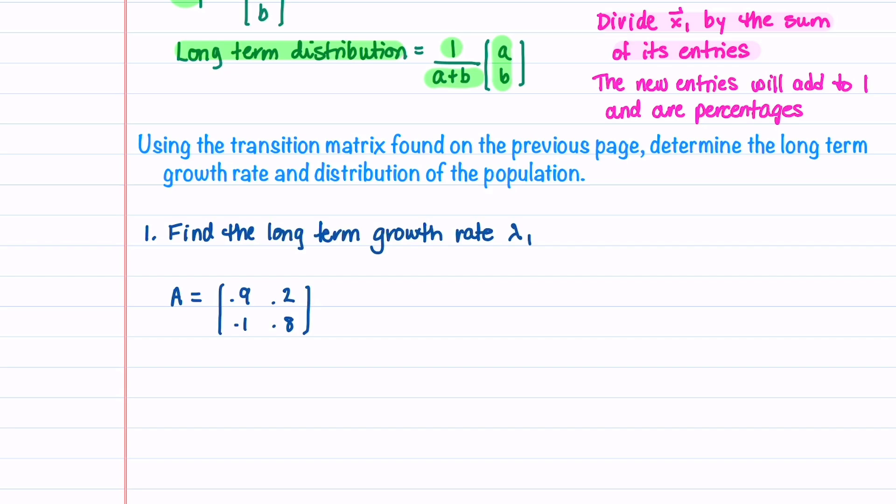Let's now use the transition matrix we found on the previous page to determine the long-term growth rate and distribution of the population. Let's begin by finding the long-term growth rate.